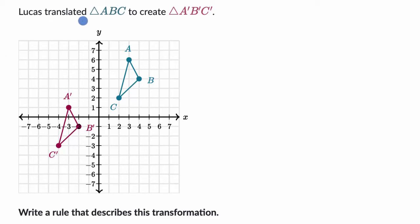We're told Lucas translated triangle ABC to create triangle A prime, B prime, C prime. So we went from this blue-green one to this burgundy one or red one. Write a rule that describes this transformation. Pause this video and try to figure this out on your own before we do this together.